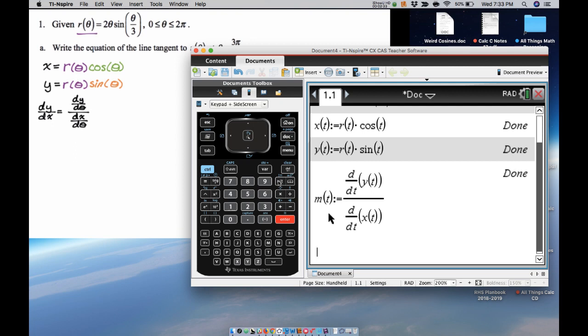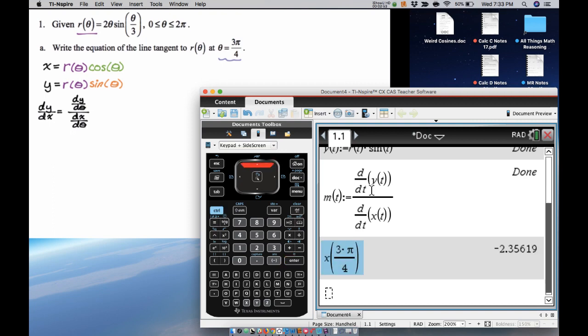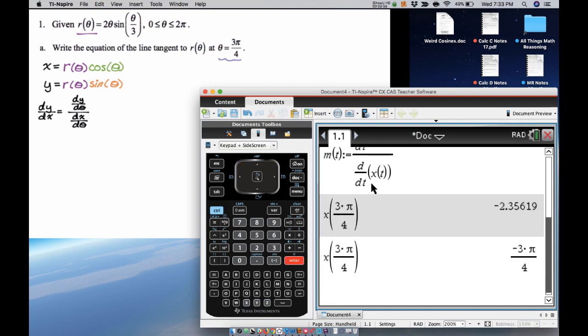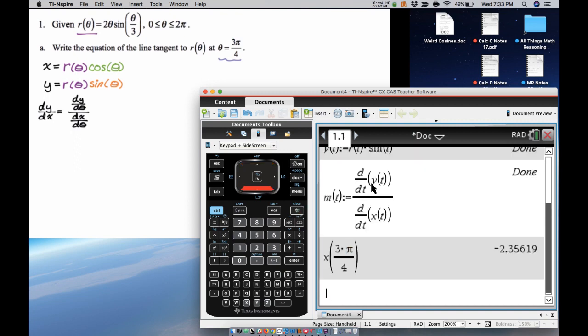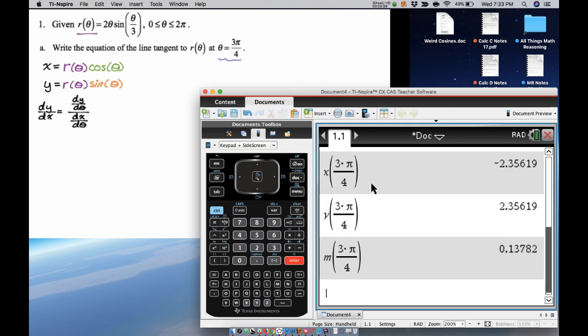And now what I'm going to do is I'm going to evaluate each of them at 3π/4. So I'm going to do x(3π/4). It says to do it approximately in the directions, so I'm just going to hit control enter. It actually has a really nice value if you just hit enter - it's actually negative 3π/4, but we're doing it approximately. So that's x. Let's get y, and then let's get the slope.